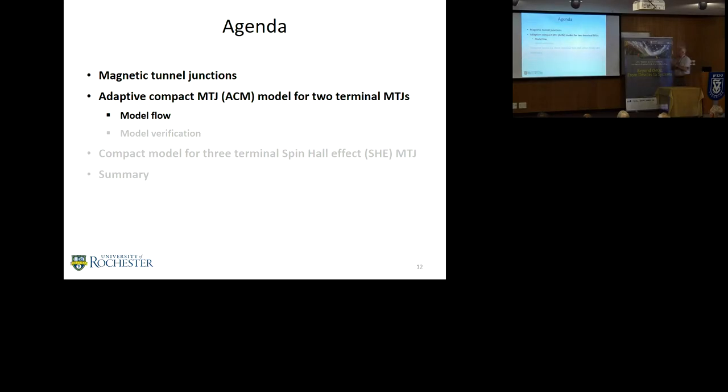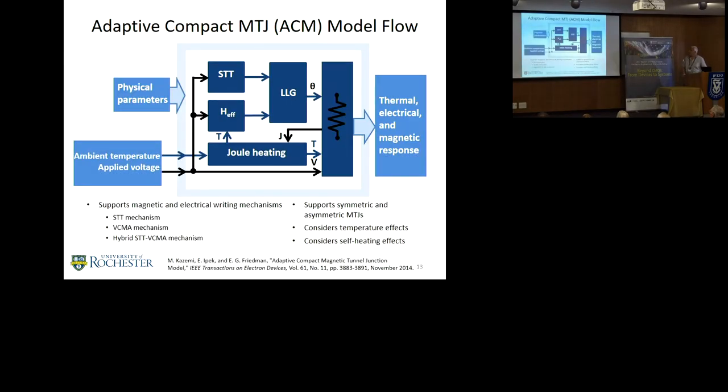Now I'm going to talk about the baseline model, which is a two-terminal MTJ. We call our model the Adaptive Compact Model, or ACM. I describe the model first, and then I'm going to show some simulation results that verify it against experimental data. Here's the basic structure that we look at, our model. We want to generate thermoelectrical and magnetic responses based on physical parameters and voltages and currents and temperatures. These are different modules we've built into our overall model structure. It supports both magnetic and electrical writing techniques, both the STT and VCMA in a hybrid version. Importantly, it supports both symmetric and asymmetric MTJs. It considers temperature effects, self-heating effects, so it's a fairly general model.